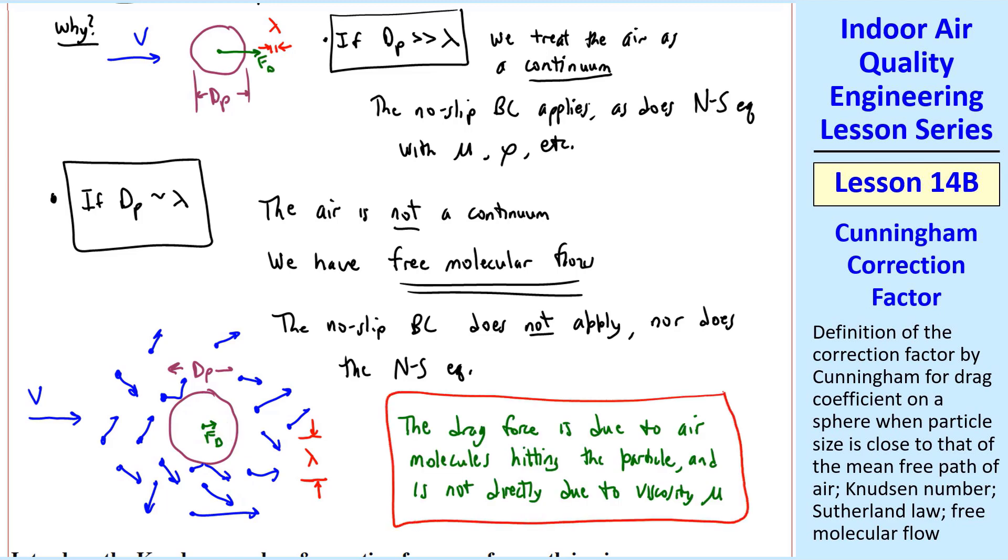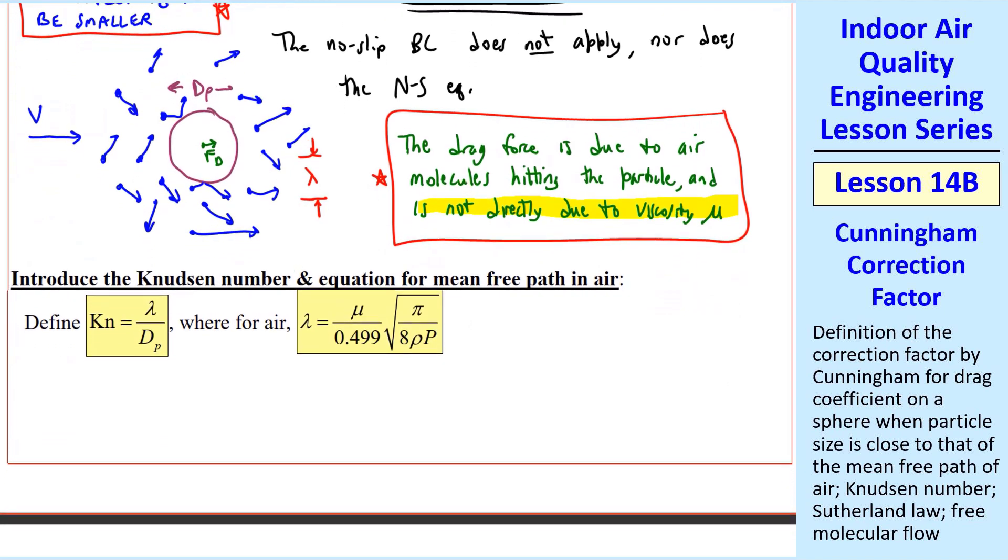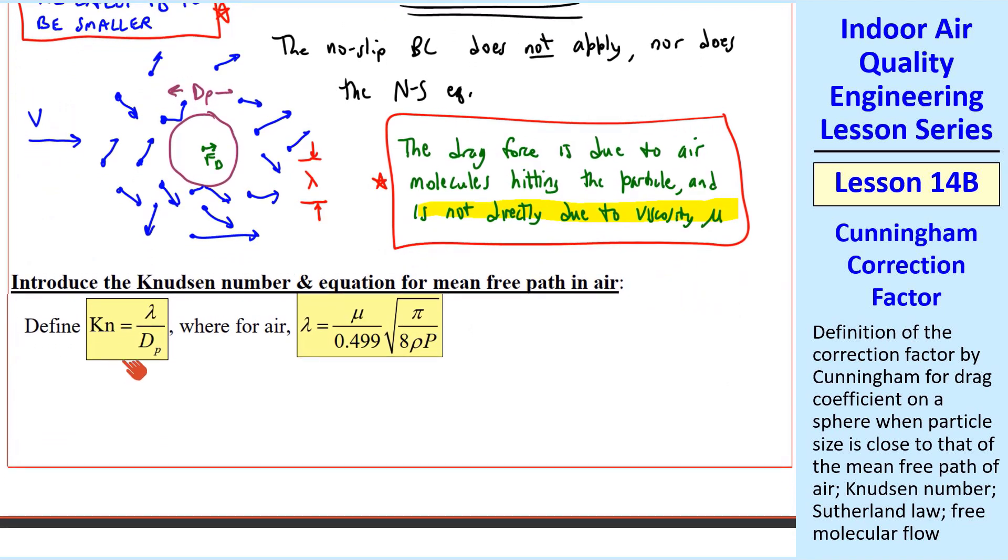For this free molecular flow condition, the drag force is due to air molecules hitting the particle and is not directly due to viscosity mu. We expect fd to be smaller for the same particle size and same average speed. For free molecular flow, we need to correct for these free molecular effects. This is where we introduce something called the Knudsen number, which we define as the ratio of mean free path to particle diameter. The Knudsen number is a non-dimensional parameter just like Reynolds number.